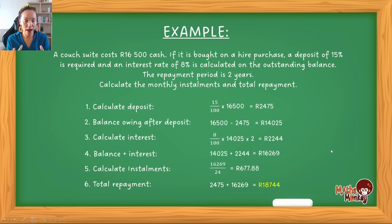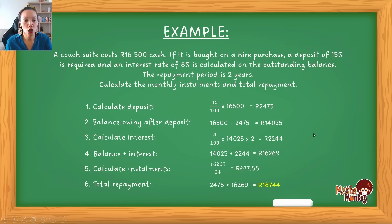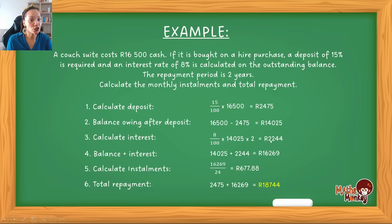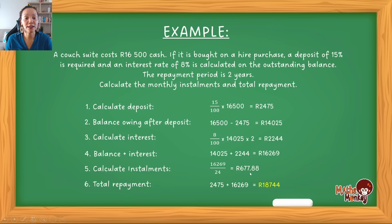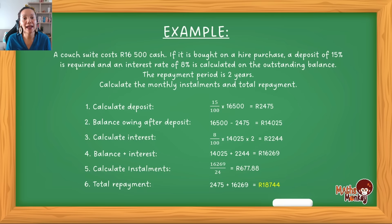This is the entire hire purchase process. In an exam, they can ask at any point. If they ask for the deposit, you stop at step two. If they ask for the interest, you stop at step three. If they ask for the monthly installment, you stop there and don't calculate the total repayment. It's important to understand the entire concept so that no matter how they phrase the question, you can use this structure to answer it.